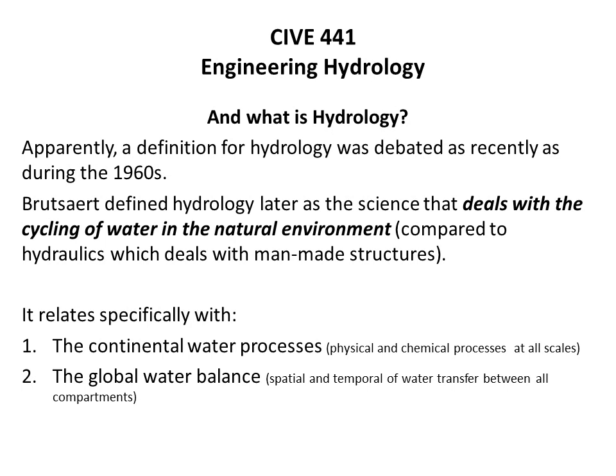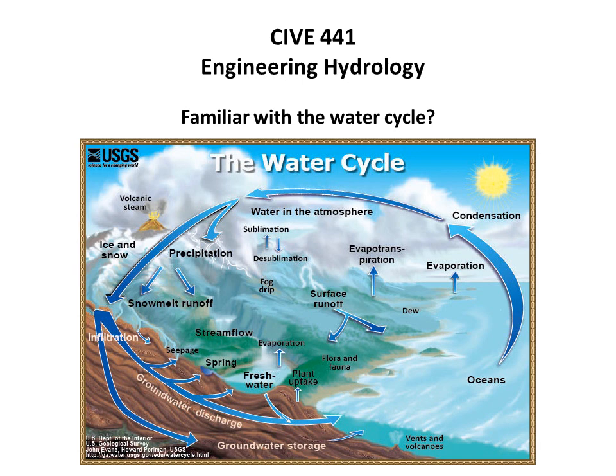Hydrology relates specifically to two things: first, the continental water processes — meaning all physical and chemical water processes that take place on the land part of Earth at all scales; and second, the global water balance with all its spatial and temporal variabilities and transfers between all compartments. The water cycle shows how many forms of water we deal with — from precipitation, water vapor, snow, groundwater, surface water, ocean water, dew, and many others. We will revisit these components in more detail in the next few lectures.